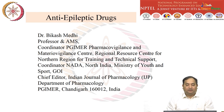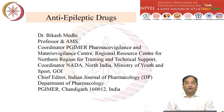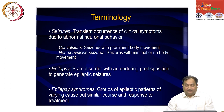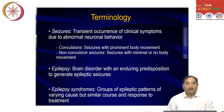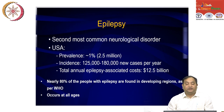Before that, let me tell you that epilepsy disorders are very common, not only in developed countries but also in developing countries. There are many terminologies used: seizure, convulsion, non-convulsive seizure, epilepsy, and epilepsy syndrome. A seizure is a transient occurrence of clinical symptoms due to abnormal neural behavior. Convulsion is a seizure with prominent body movement; without movement, we call it non-convulsive or absence seizure. Epilepsy is a brain disorder with an enduring predisposition to epileptic seizures.